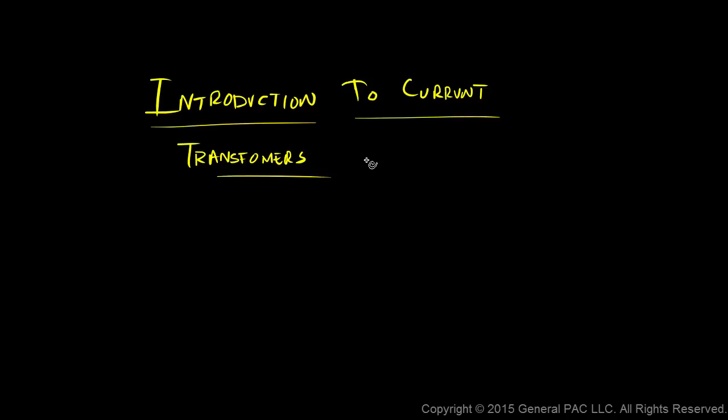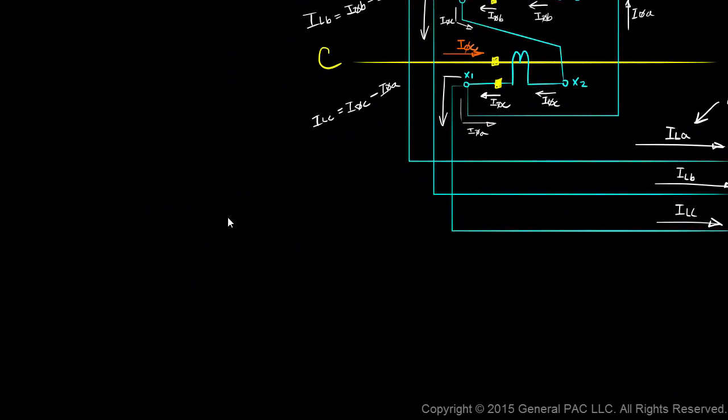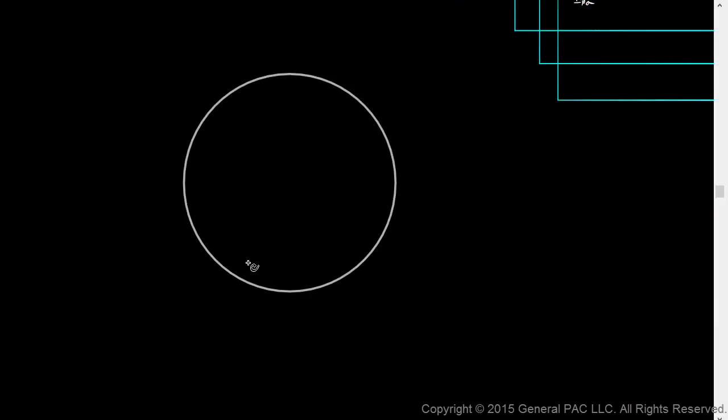Introduction to Current Transformers Part 5. Now let's take a couple of minutes to actually look at these values from a phasor diagram perspective. So suppose we have this circle and then we have the x-axis and the y-axis drawn like this.